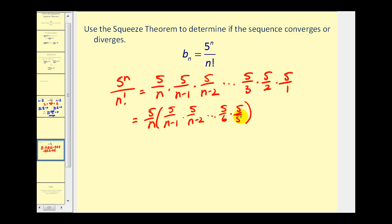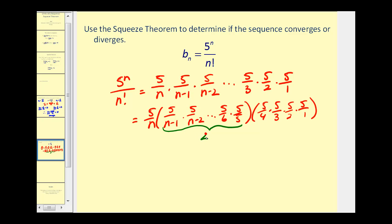The remaining factors would be greater than 1: 5 over 4, 5 over 3, 5 over 2, and 5 over 1. So again we have the same terms — we have this 5 over n term, and all of these terms here would be less than or equal to 1, therefore their product would be less than or equal to 1. And then we have these factors that are all greater than 1, therefore their product would be greater than 1. Now we're going to take this and create an inequality.